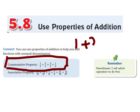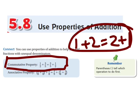That's like saying 1 plus 2 equals 2 plus 1. We all know that is true. That's the commutative property right there.